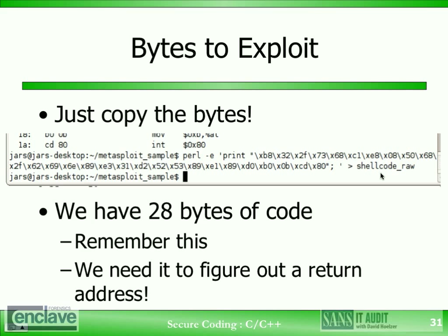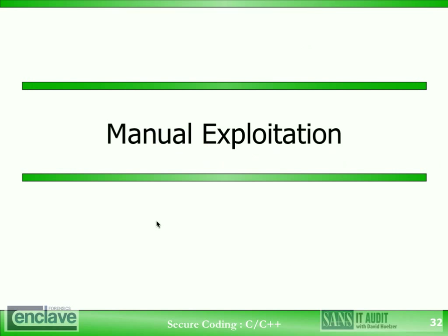Some people like to keep it all on the command line, but I prefer to move them into a file so I don't have to re-key them every time. How long is that exploit code? If we count it up, you'd discover that it's 28 bytes long. That's very interesting — when we have 124 bytes to work with, we only need 28 to execute a shell. That means we've still got a lot of room to work with. We need to keep in mind how many bytes of code we have, because that number will be used to determine the actual return address.